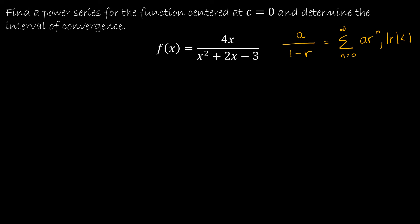I'm going to think about the fact that x² + 2x − 3 can be written as (x + 3)(x − 1). Why is that important? Because of partial fractions — you will never be done with partial fractions. I can say that f(x) is the same as 4x over (x + 3)(x − 1).